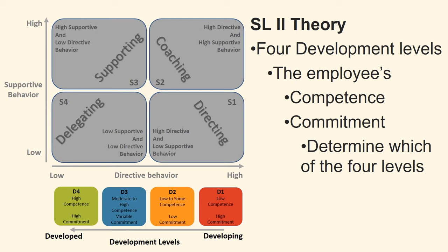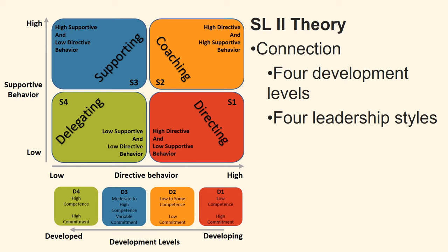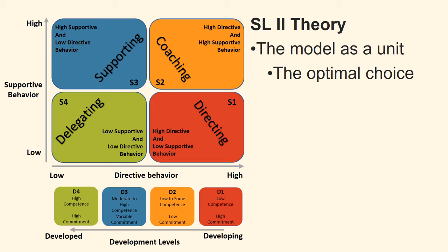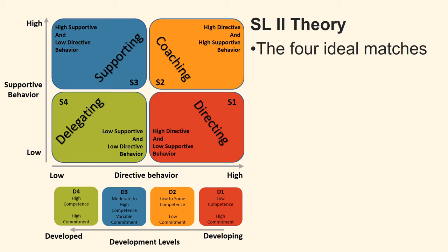We will now review the connection between the two approaches: the development levels of the employee and the four leadership styles the leader can choose between. The leader must assess the employee's placement in one of the four levels of development and then choose the leadership style that suits the individual employee. There are four ideal matches between the employee's level of development and the leadership style the leader should choose.